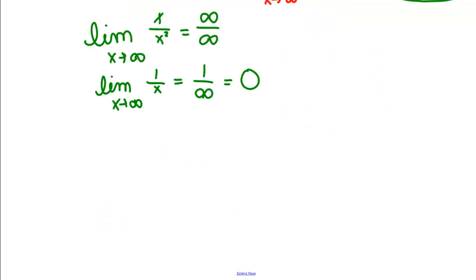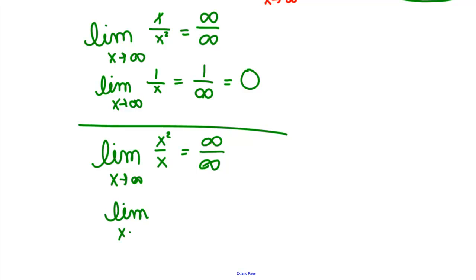But on the other end of the spectrum, if we look at the limit as X goes to infinity of X squared over X, that's also infinity over infinity. But when you take and you reduce that algebraically, you get X over 1, which is infinity over 1, which is infinity.